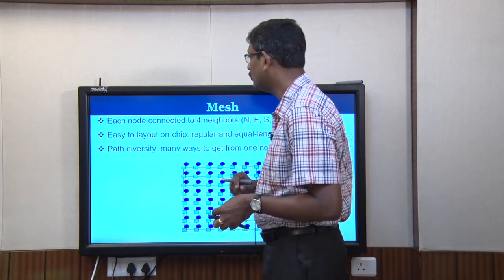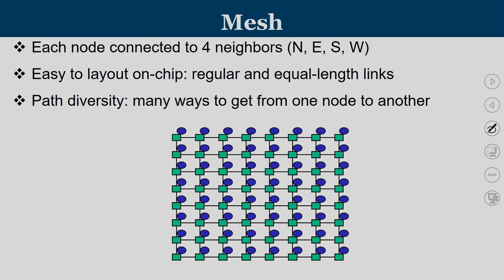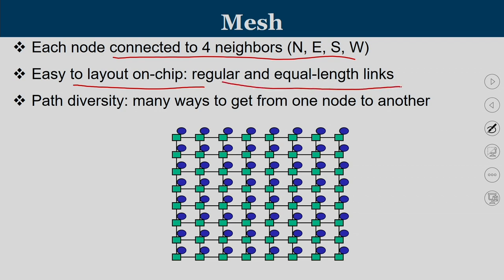In mesh topology, each router is connected to four neighbors — north, east, south, and west — and to a local processing tile. It is easy to lay out because it is a planar structure with regular equal-length links. Multiple paths exist between any two routers, allowing path diversity exploitation.